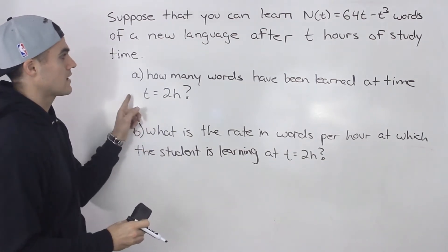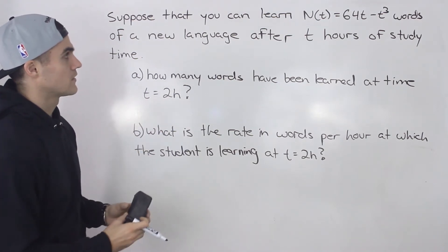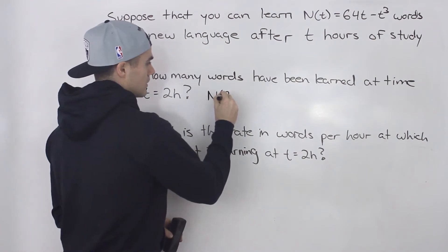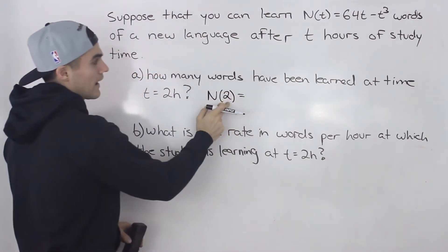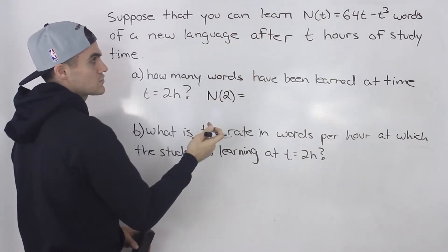So starting off with part A, how many words have been learned at time t equals two? Well, really simple. All we have to find is the amount of words that you learn at t equals two. So you plug in two for t in the function.